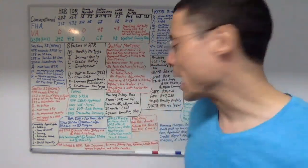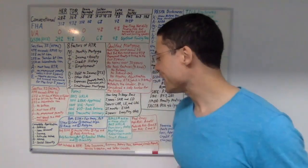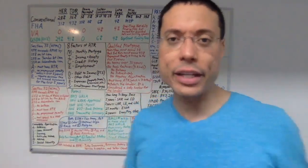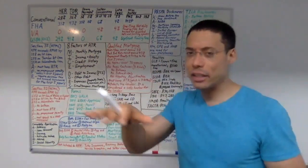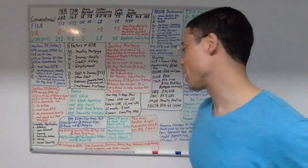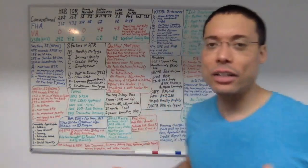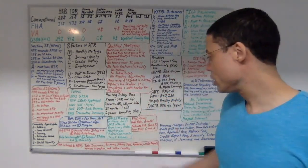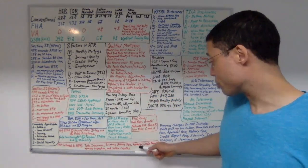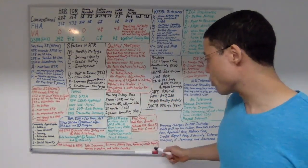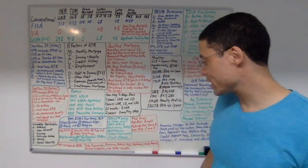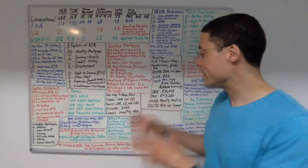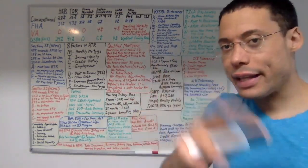Another topic: what is not included in the APR? The APR is the annual percentage rate. Things not included in the APR are: title insurance, escrow, notary fee, appraisal fee, credit report fee, termite inspection fee, and seller credits.